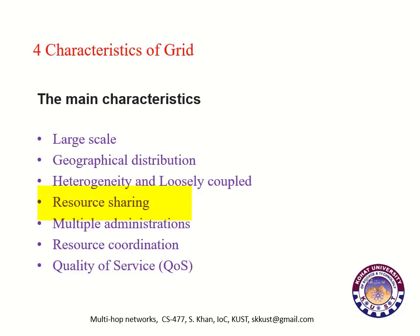Number five: resource sharing. Resources in a grid belong to many different organizations that allow other organizations and different users to access them. Non-local resources can thus be used by applications, promoting efficiency and reducing costs. Number six: multiple administrations. Each organization may establish different security and administrative policies under which their own resources can be accessed and used. Thus, network security is a huge challenge in grid computing.